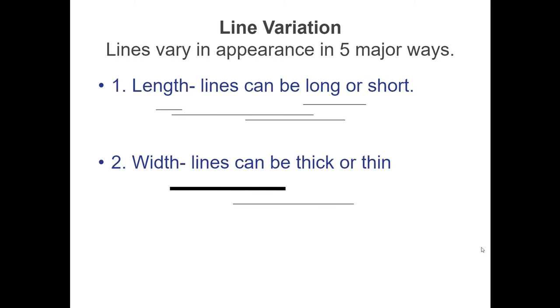Now we're on to line variations. Lines appear in five major ways—how the lines look different. We have length of lines—long or short. Two, width of lines—thick or thin. Are you using an ink pen or a bold tip marker to get thick or thin lines?